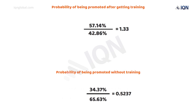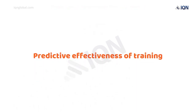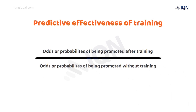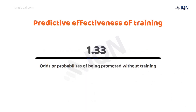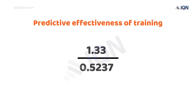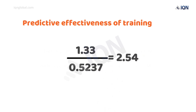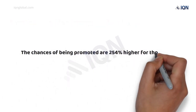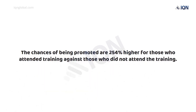With these two results, we can now calculate the predictive effectiveness of training. This is the odds of being promoted after training divided by the odds of being promoted without training. For our example, the predictive effectiveness of training is 1.33 divided by 0.5237, which equals 2.54, or 254%. This calculation shows that the chances of being promoted are 254% higher for those who attended training compared to those who did not.